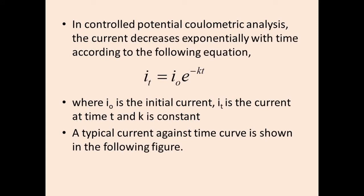In controlled potential coulometric analysis, the current decreases exponentially with time according to the equation: It = I₀ · e^(−kt), where It is the current at time t, I₀ is the initial current, and k is the rate constant.